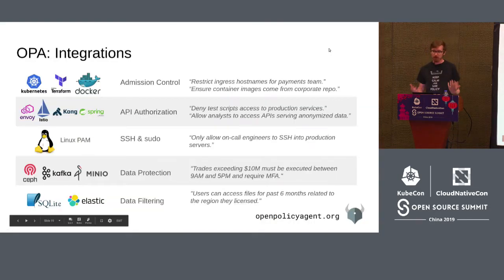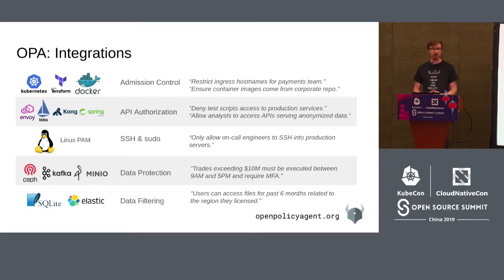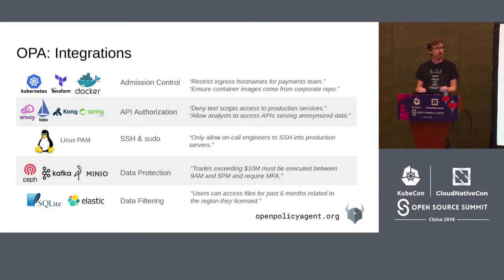When you start using OPA for the first time, you'll be looking for integrations with existing ecosystem projects. We have over 20 to 25. For admission control — one of the main use cases today — we have integrations with Kubernetes, Terraform, and Docker. The idea is to enforce policies over configurations that developers supply when deploying applications: things like requiring container images to come from the corporate registry, requiring CPU and memory limits, or preventing conflicting ingresses from being created.